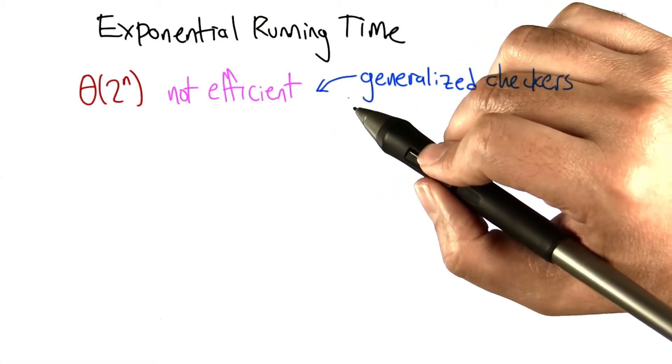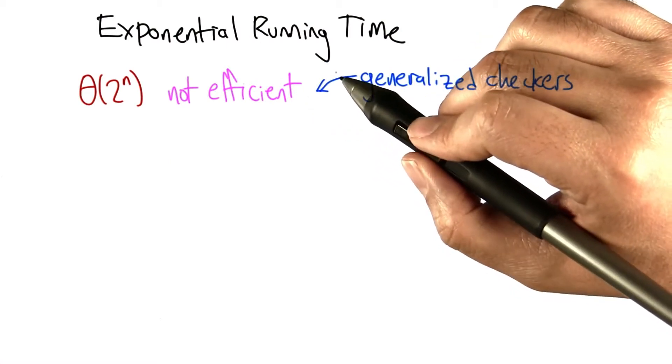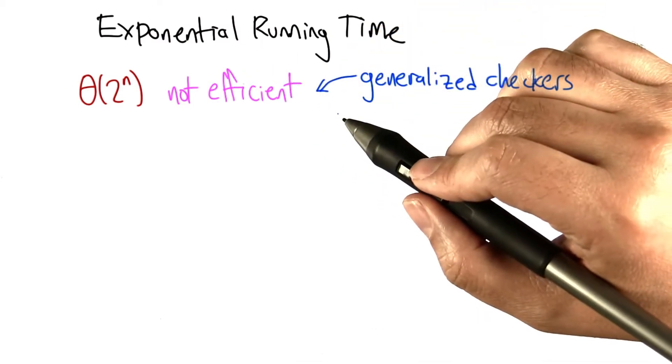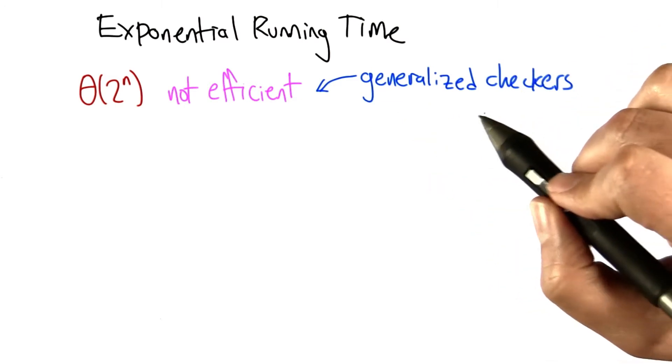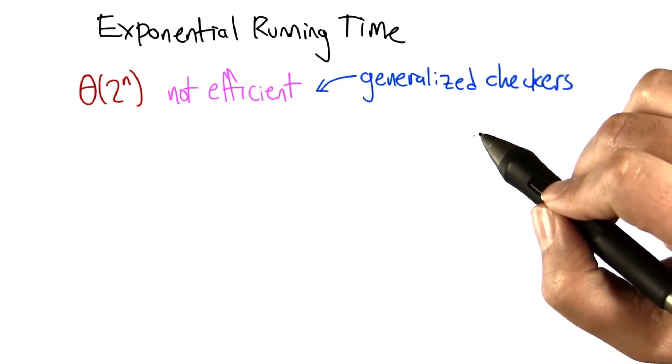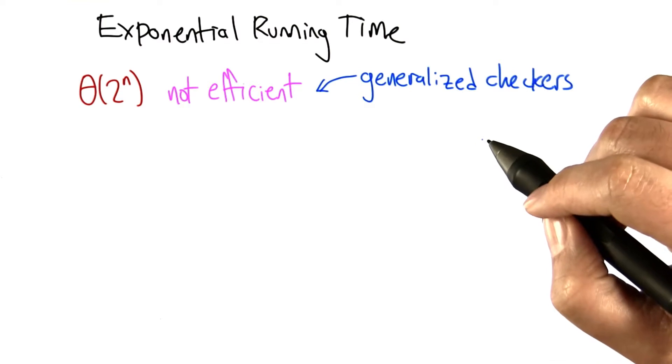We're not going to talk in this course about problems that have provable exponential lower bounds. That is, there can be no polynomial time solution to them. There's one in the literature, a generalization of checkers, that you can learn more about if you take a course in complexity.